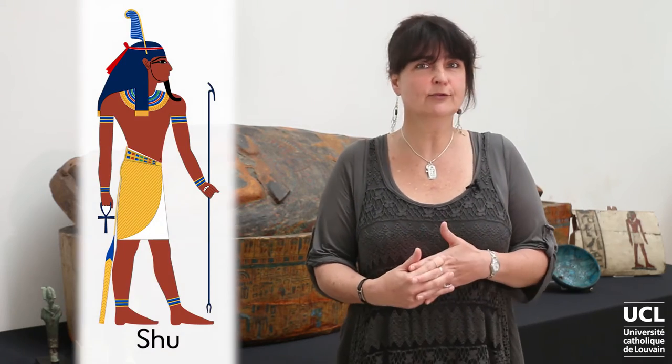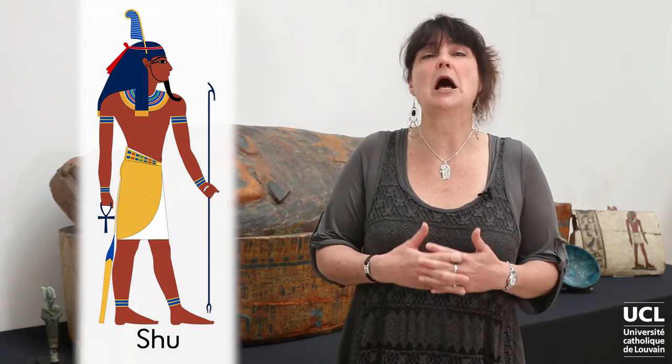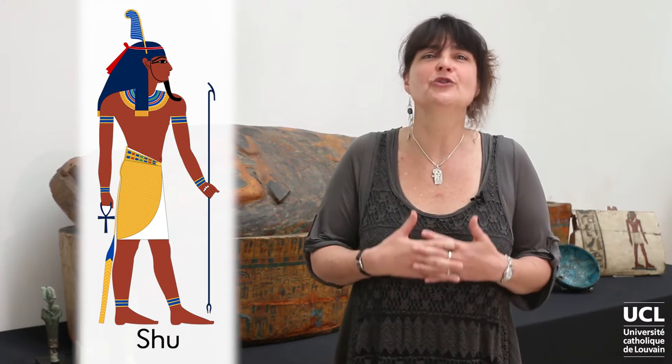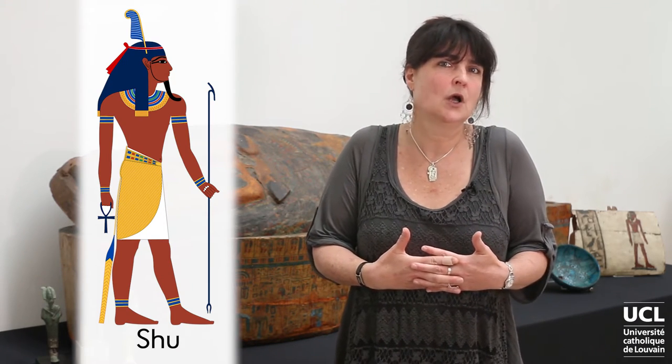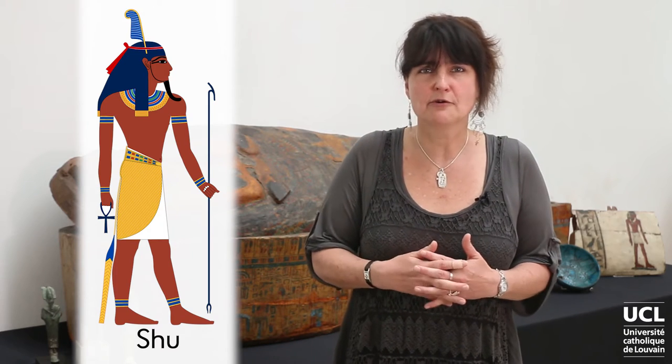By contrast, in ancient Egypt, in the Heliopolitan view, we have seen that there is something else that already existed before the primeval God Atum. Now, we will examine the next stages of this creation process. In the first stage, Atum created the first gods, Shu and Tefnut, exclusively through his own saliva — or, according to another story, through his saliva. So there is no mother involved here at all.